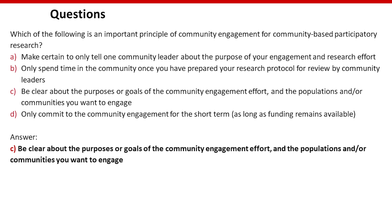Question one: Which of the following is an important principle of community engagement for community-based participatory research? A: Make certain to only tell one community leader about the purpose of your engagement and research effort. B: Only spend time in the community once you have prepared your research protocol for review by community leaders. C: Be clear about the purposes or goals of the community engagement effort and the populations and/or communities you want to engage. D: Only commit to the community engagement for the short term as long as funding remains available. The answer is C: be clear about the purposes or goals of the engagement effort and the populations and/or communities you want to engage.